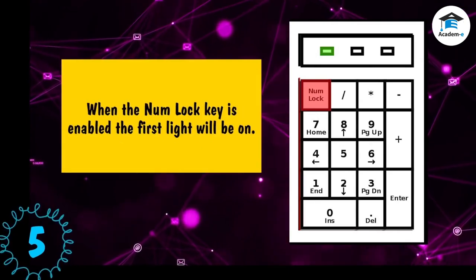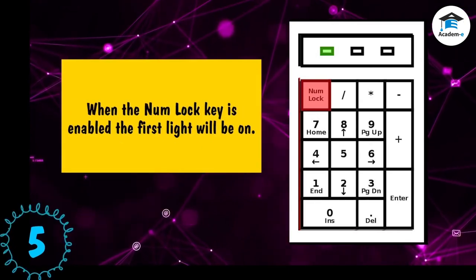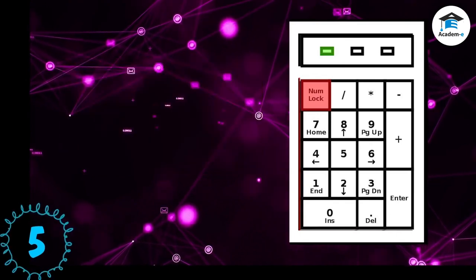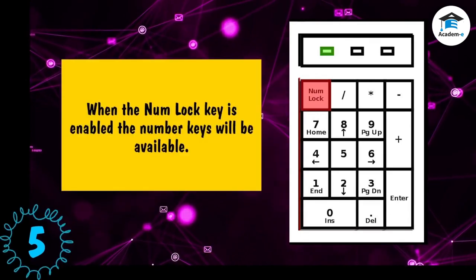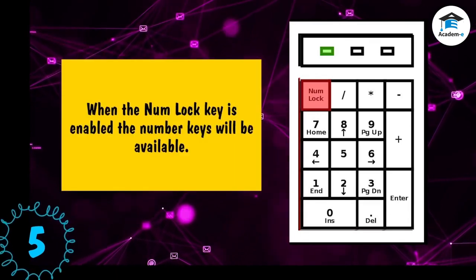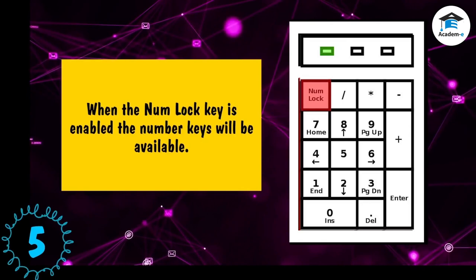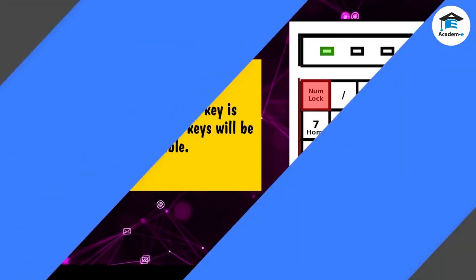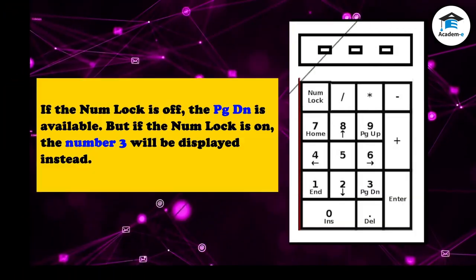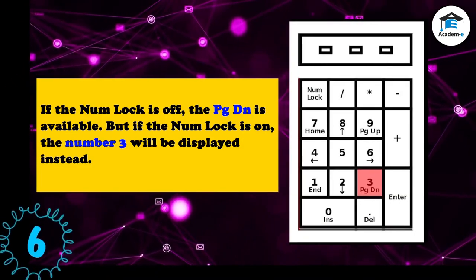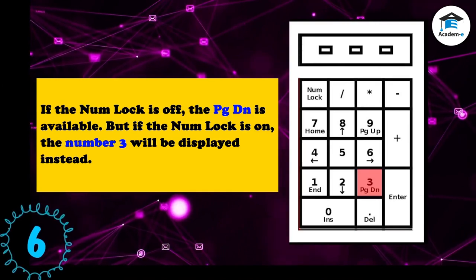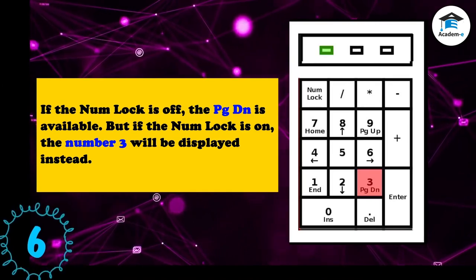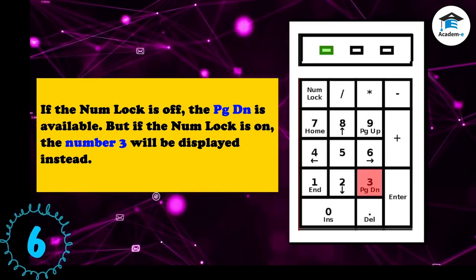When the Num Lock key is enabled, the first light will be on and the number keys will be available. If the Num Lock is off, the PgDn key is available, but if the Num Lock is on, the number three will be displayed instead.